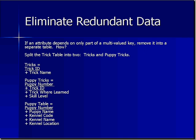The second step: eliminate redundant data. If an attribute depends on only part of a multi-valued key, remove it into a separate table. We split the trick table into two: the tricks themselves, and a table called puppy tricks that will contain information about puppies and the tricks they know. The tricks table has the name of the trick and a primary key — the trick ID. Puppy tricks is the linking table that holds things together. It takes the puppy's identification number and the trick ID and stores where the trick was learned and the skill level for that particular combination of trick and puppy.